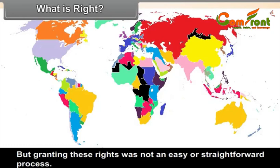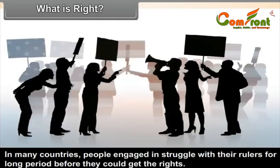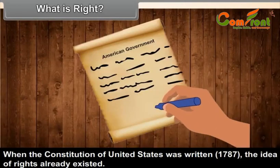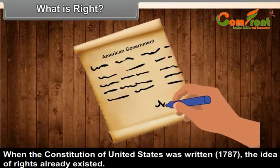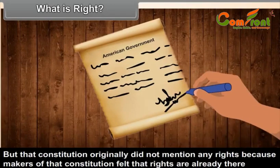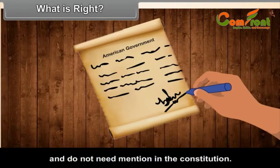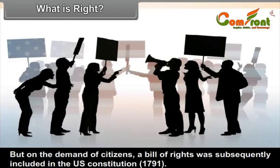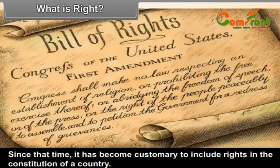Granting these rights was not an easy or straightforward process. In many countries, people engaged in struggles with their rulers for long periods before they could get their rights. When the Constitution of the United States was written in 1787, the idea of rights existed, but that Constitution originally did not mention any rights, as its makers felt that rights were already there and did not need mention. But on the demands of citizens, a Bill of Rights was subsequently included in the US Constitution in 1791. Since that time, it has become customary to include rights in the constitution of a country.